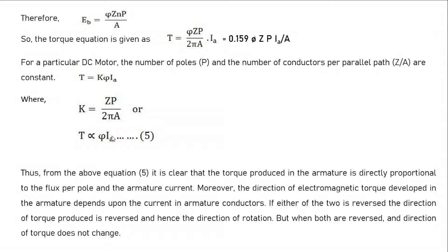The direction of electromagnetic torque developed in the armature depends upon the current in the armature conductors and the direction of the flux. If either one is reversed, the direction of torque is reversed. However, if both are reversed, the torque direction will not change, since both negatives cancel out.